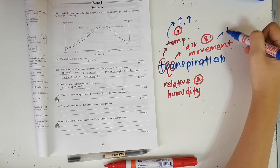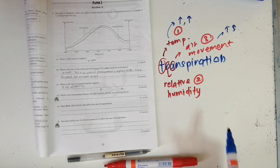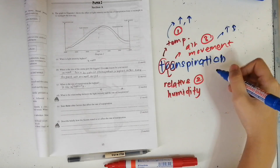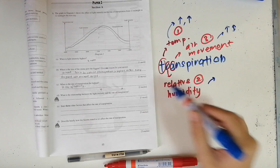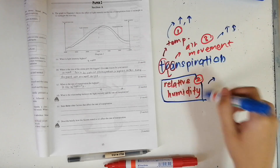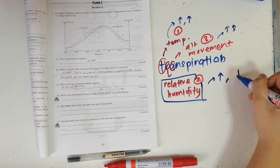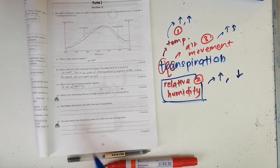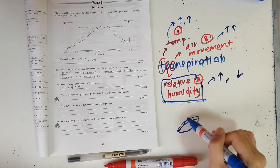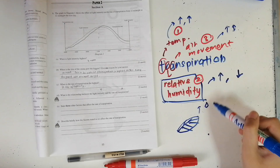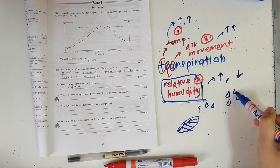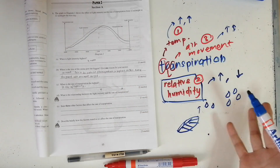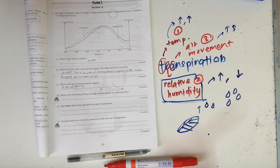Next, air movement — when the air movement increases, the rate of transpiration also increases. Lastly, relative humidity — this is the only factor that works differently, so take note. When the relative humidity increases, the rate of transpiration actually decreases. This is because transpiration is water vapor escaping from the leaves, and when there is already a lot of water vapor in the environment, less water vapor will escape from the leaf.